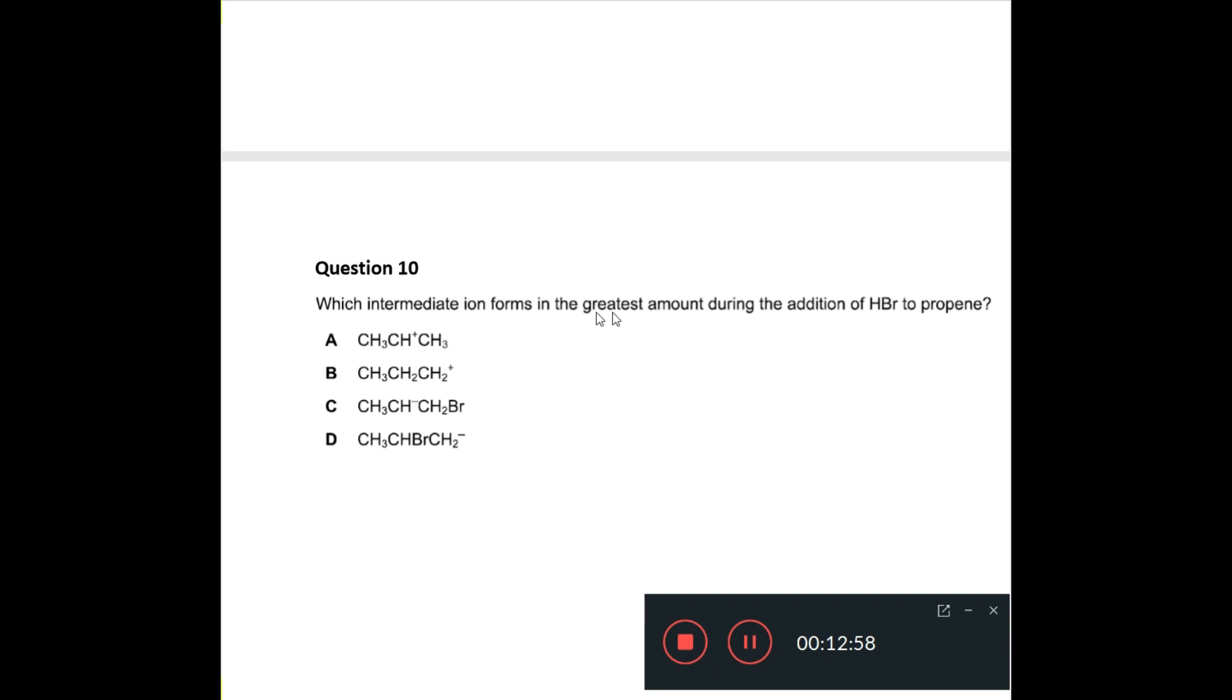Question ten says, which intermediate ion forms the greatest amount during the addition of HBr to propene? This could be a question on alkenes as well. Now, if you try to remember Markovnikov's rule, because propene is an asymmetrical alkene, and so it will form two products when it reacts with HBr. Now, the more stable intermediate will be favored, and so the product that involves a more stable intermediate will be formed in the greatest amount. The Markovnikov's rule says that the hydrogen is going to tend to add to the carbon in the double bond that already has more hydrogen. So, the hydrogen is going to tend to add to the carbon with more hydrogen already attached. So, it's going to tend to add to this one, in which case you're going to have CH3 here, and the plus charge will be on the second carbon, which is corresponding to your answer A.